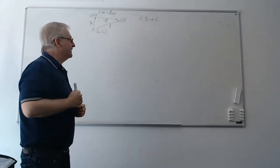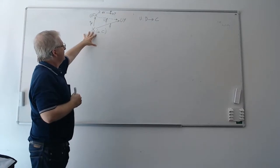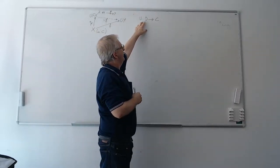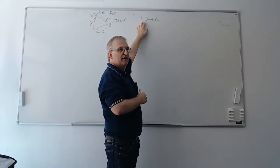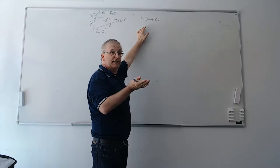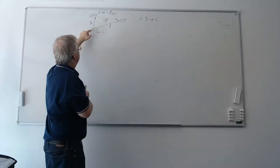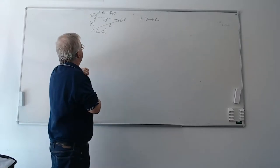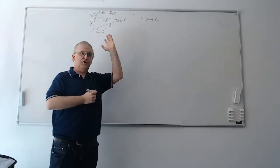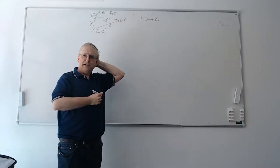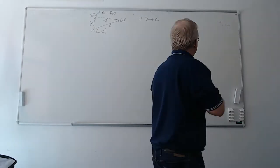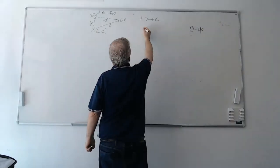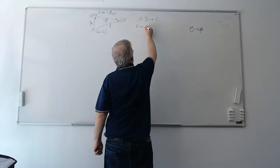The example we had last time: if you take the category of sets for C — sets and functions between sets — and U is the functor from the category of monoids and monoid homomorphisms that forgets the monoid structure and only keeps the underlying sets, then what we produced is a monoid F of x, which is actually the free monoid of the alphabet x. We took that as a definition of an adjunction.